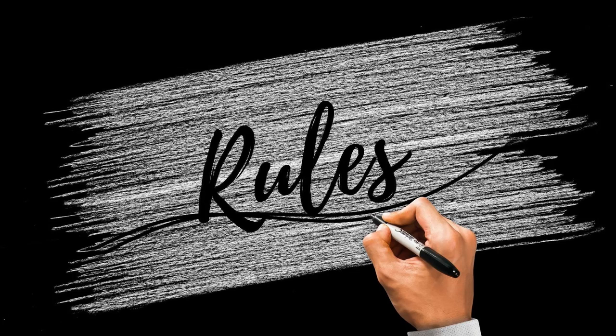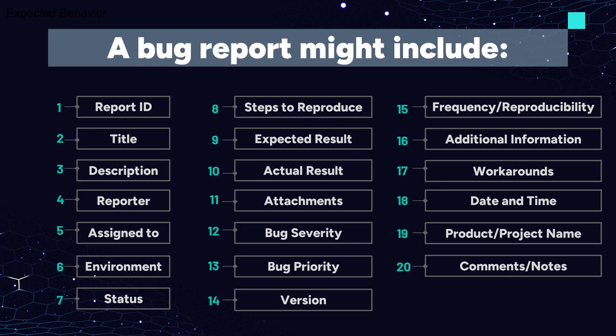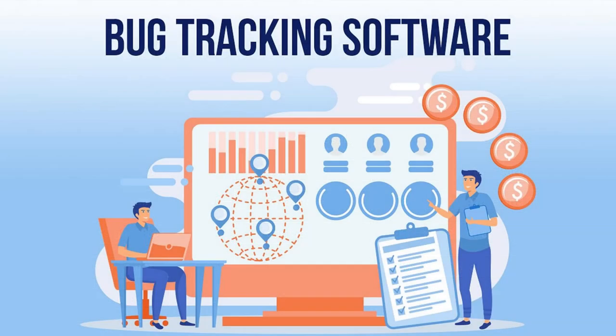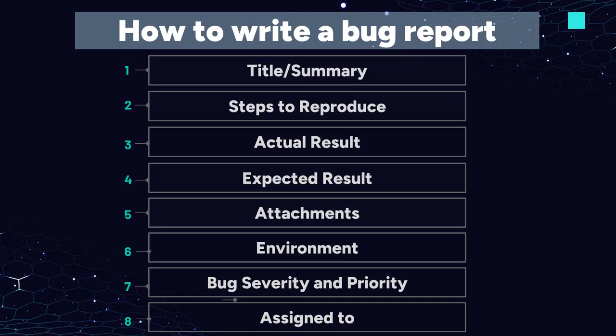You can pause the video and check the huge list of fields that can be in the bug tracking system. The specific fields and their format may vary depending on the bug tracking system or project management tool being used. In this video we will provide a detailed guide on how to write a basic bug report with eight of the most commonly used bug report fields such as title/summary, steps to reproduce, actual result, expected result, attachments, environment, bug severity and priority, and assigned to. We will also show how to add them to the bug tracking system.